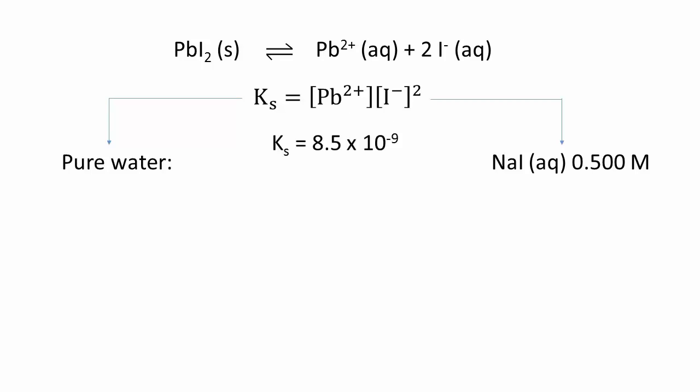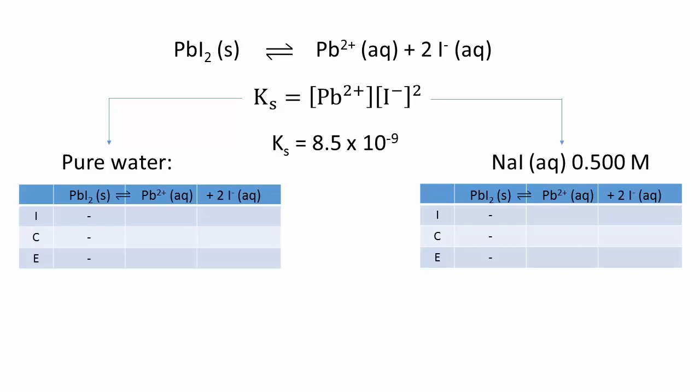Either way, the solubility product is 8.5 times 10 to the negative 9 at 25 degrees Celsius. For both calculations, construct the initial line in the ice table.